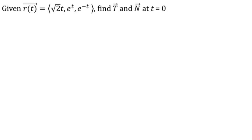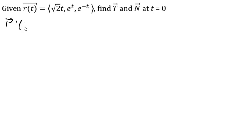We want to find the unit tangent and unit normal vector to this vector function at the point t equals 0. For that, we're going to need to start by finding the regular old tangent vector.